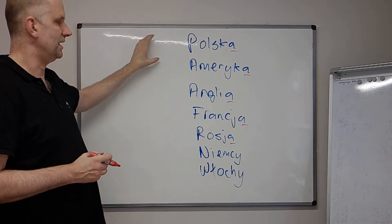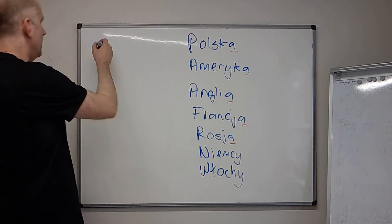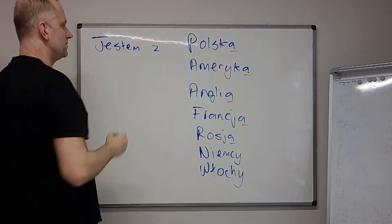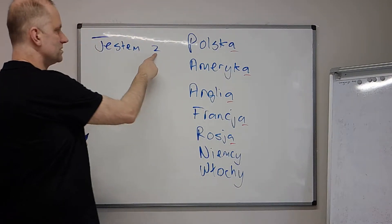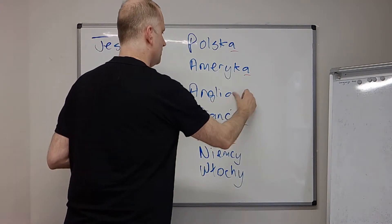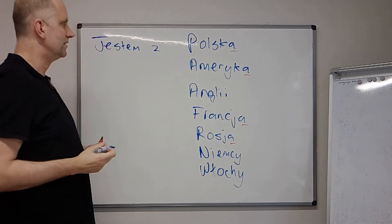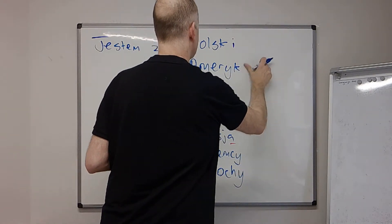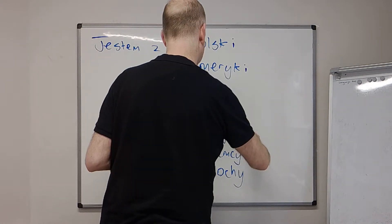Now what we need to look at is if you want to say you are from one of these countries. If I say 'I am' — jestem — and then 'I am from' — jestem ze. If I say 'I am from England', when you use ze you have to change the word — the ending changes. So Anglia: you change the last A to an I. This happens with all of them that end with A: ze Polski, ze Ameryki, ze Francji, ze Rosji.